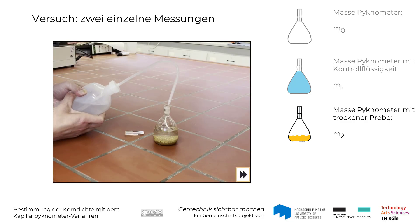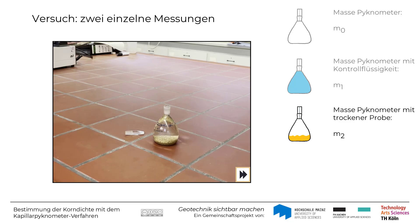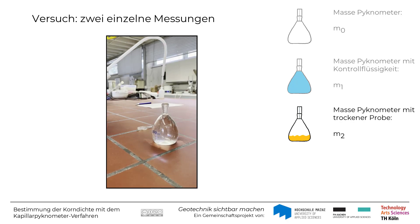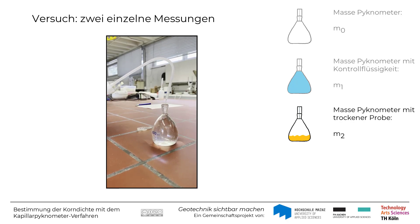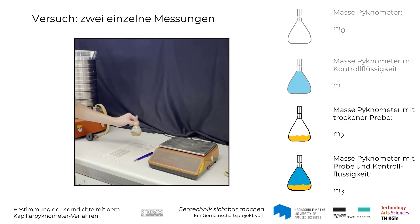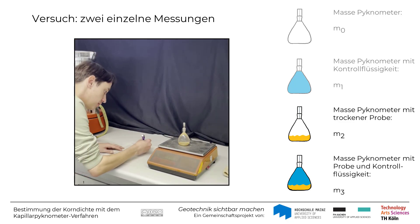Anschließend wird das Pygnometer mit Kontrollflüssigkeit aufgefüllt und entweder für mindestens eine Stunde in ein Wasserbad oder für mindestens 16 Stunden in einen Raum mit konstanter Temperatur gestellt. Die Temperatur wird aufgezeichnet und der Spiegel der Flüssigkeit kontrolliert und gegebenenfalls korrigiert. Nach Ablauf der genannten Zeit wird das Pygnometer mit der Bodenprobe und der Kontrollflüssigkeit gewogen und die Masse M3 notiert.